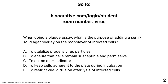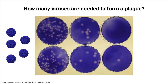New question: when doing a plaque assay, what's the purpose of adding a semi-solid overlay on the monolayer? Options: to stabilize particles; ensure cells remain susceptible and permissive; act as a pH indicator; keep cells adherent to the plate; or restrict viral diffusion after lysis of infected cells. Most of you got the right answer — E, to restrict viral diffusion after lysis of infected cells. The agar is not to keep cells adherent; cells adhere under a liquid overlay, which is how you grow them.